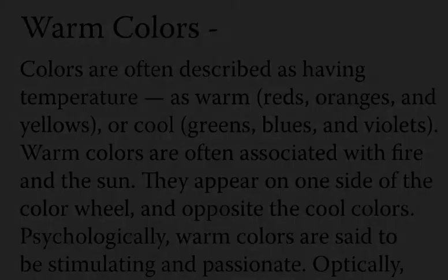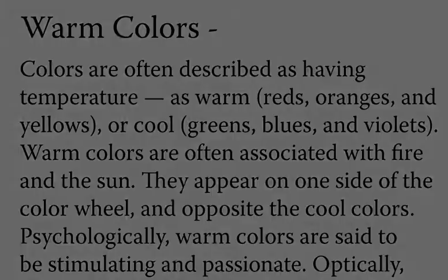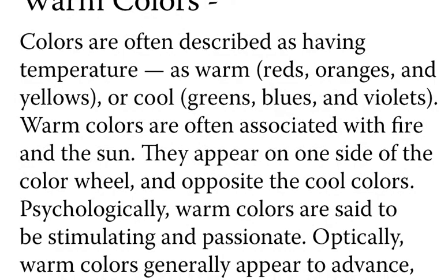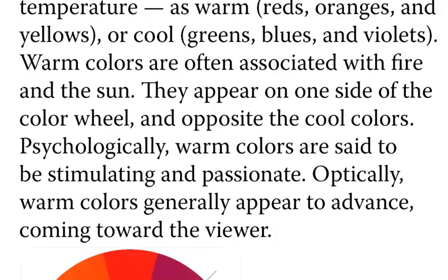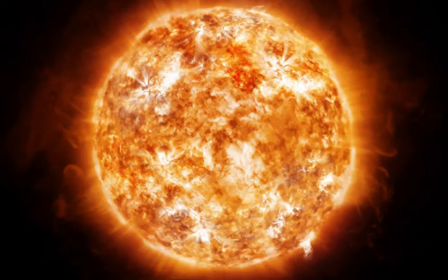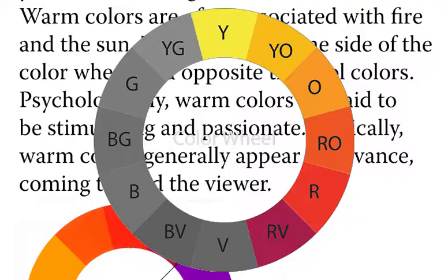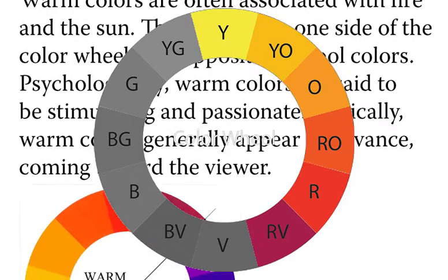Warm colors. Colors are often described as having temperature, as warm or cool. Warm colors are often associated with fire and the sun. They appear on one side of the color wheel, and opposite cool colors. Psychologically, warm colors are said to be stimulating and passionate. Optically, warm colors generally appear to advance, coming toward the viewer.